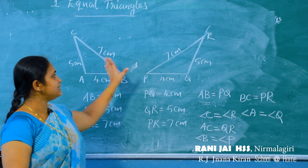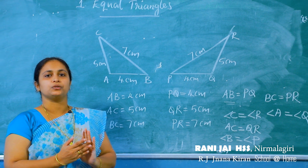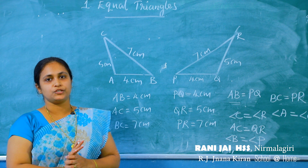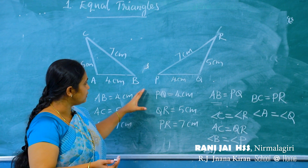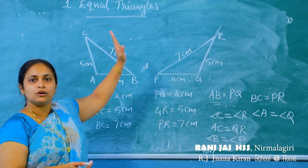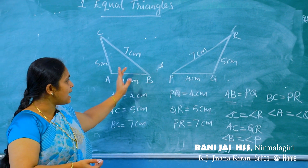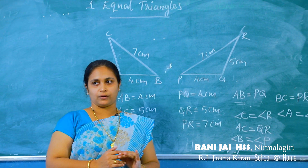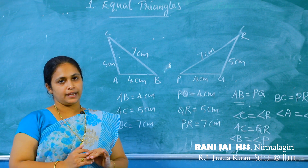In the first case, if all sides of a triangle are equal to all sides of another triangle, then their angles are also equal. That is, the angle opposite of equal sides are also equal.